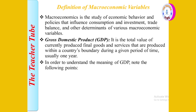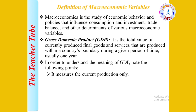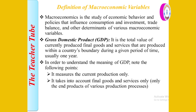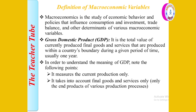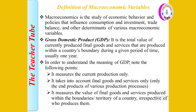To understand GDP, it measures the current production of goods and services. It takes into account final goods and services only — not intermediate goods in the production process. Intermediate or semi-finished goods, which are already consumed in the production process to make a raw product, are excluded.